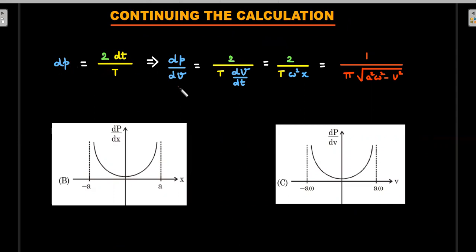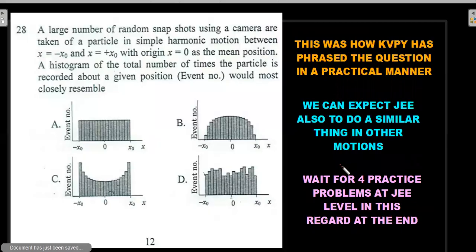So options B and option C from the given question are correct, and you could see the shape of that particular probability distribution functions are similar. Now let's see what KVPY has done in the past—how can this question be asked? So this was how the KVPY actually rephrased the question and used that stroboscopic snapshot or random snapshots, right?